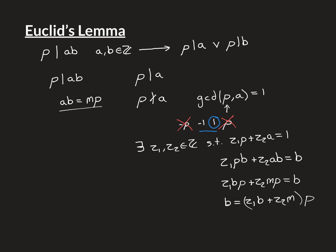And Z1 is an integer, B is an integer, Z2 is an integer, M is an integer, so we're just multiplying integers together and then adding them. The integers are closed under addition and multiplication, so this is going to be an integer. So I have now shown that B can be written as an integer multiple of P, and therefore I have shown that P divides B.